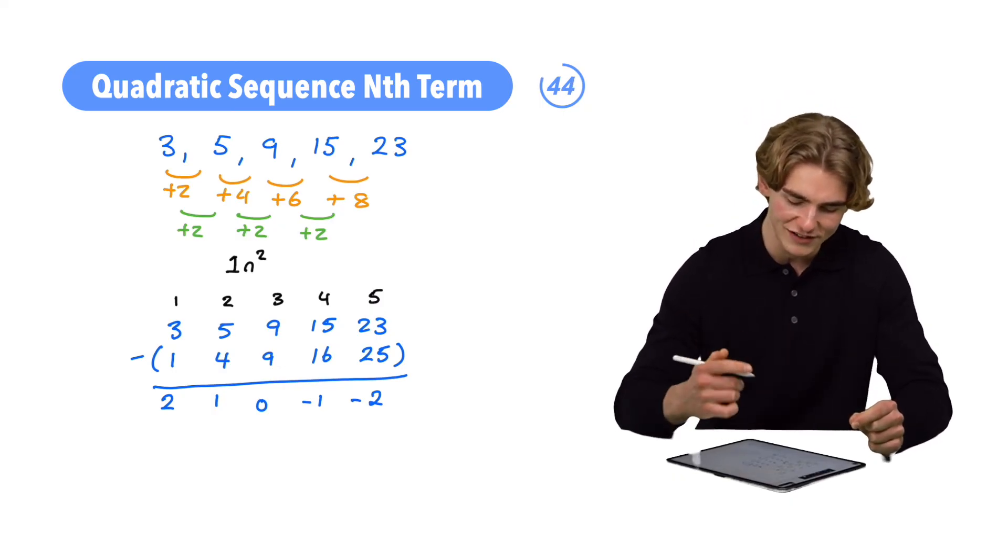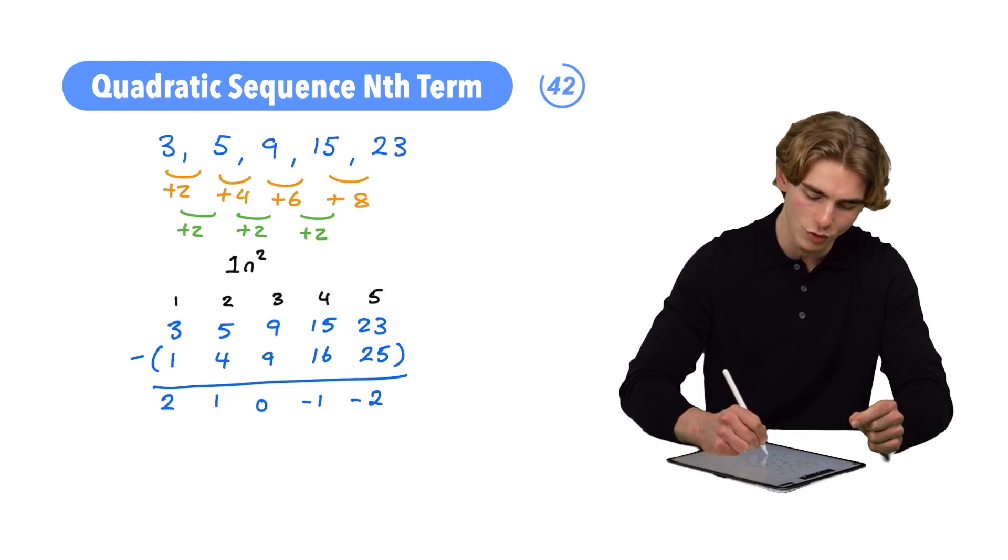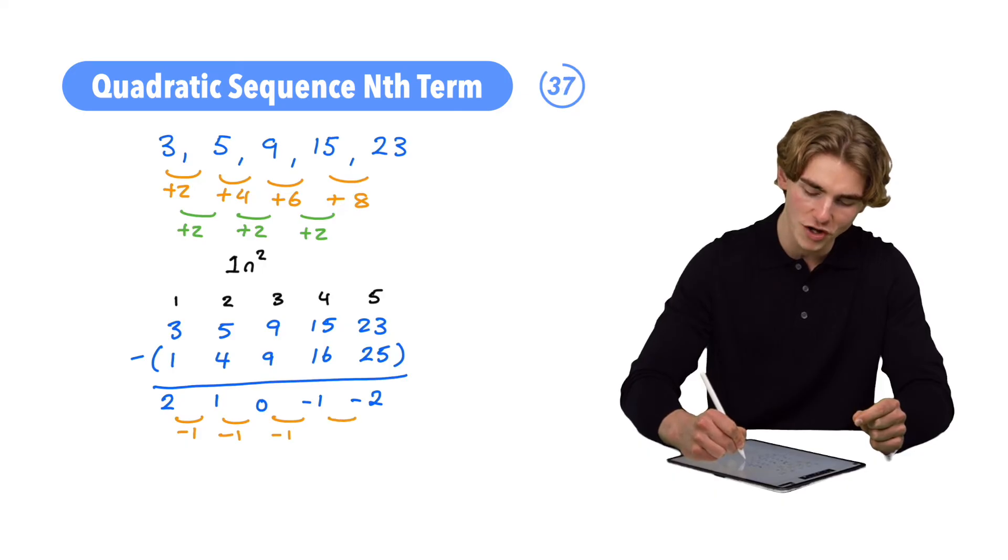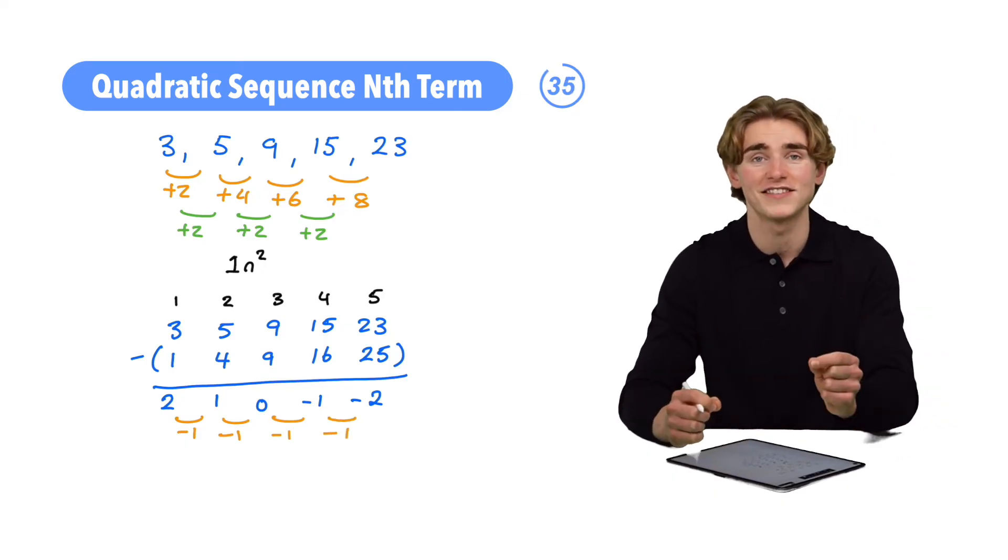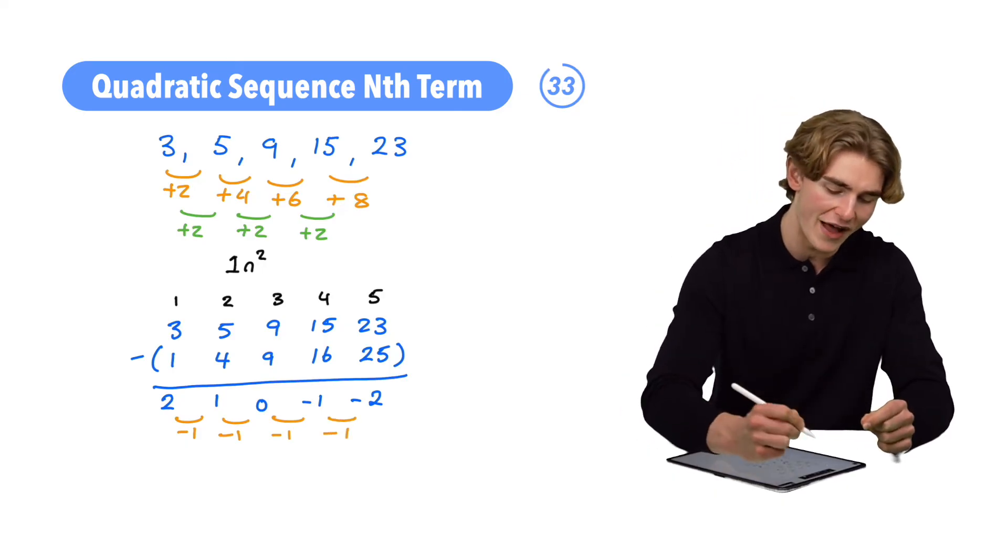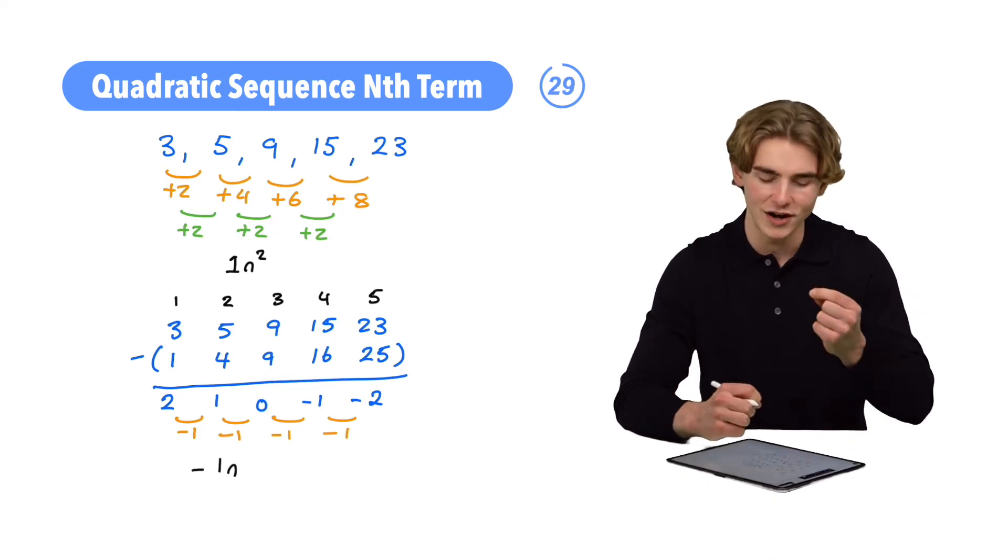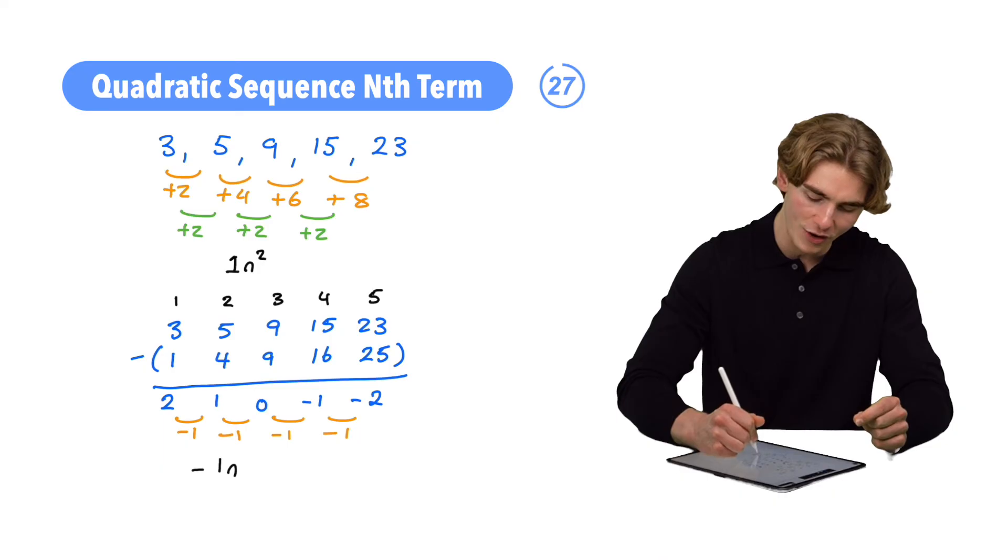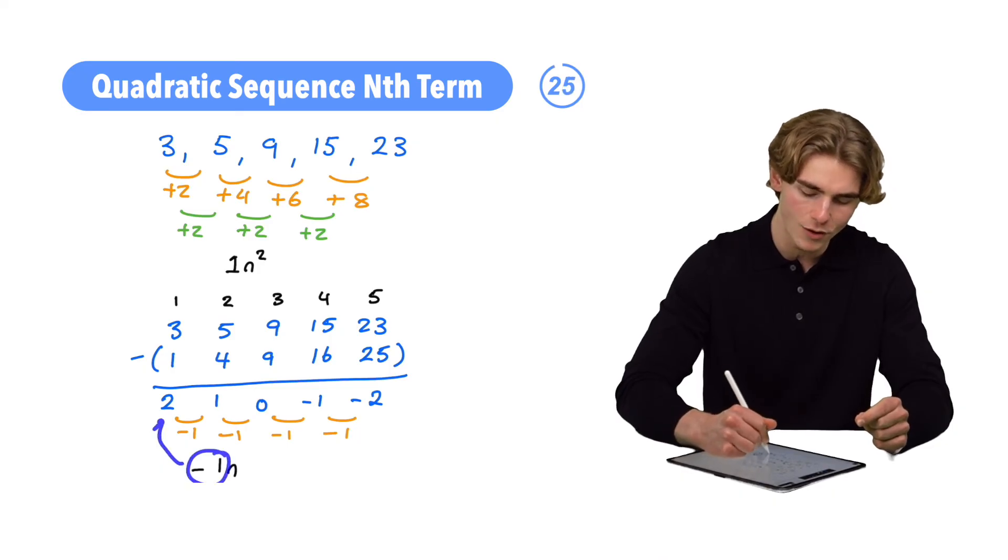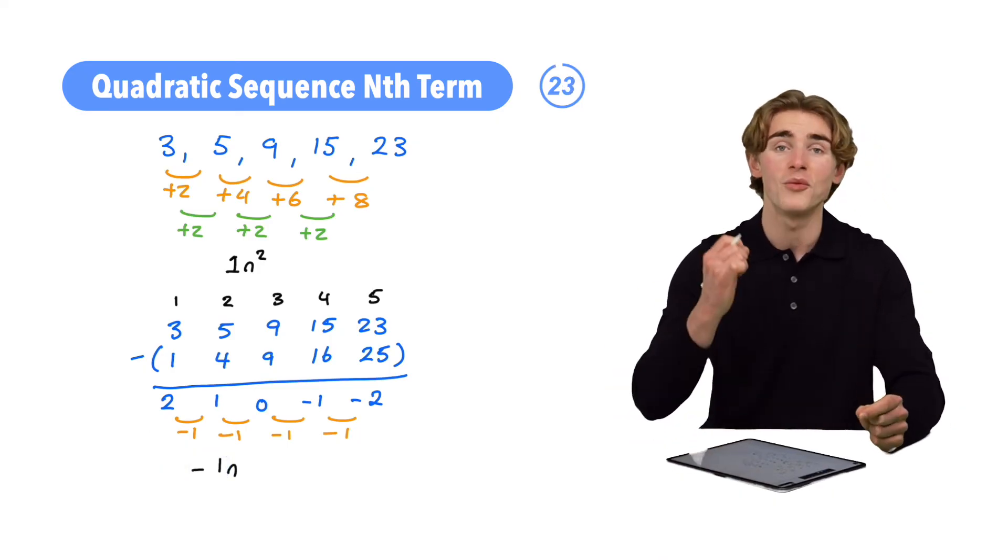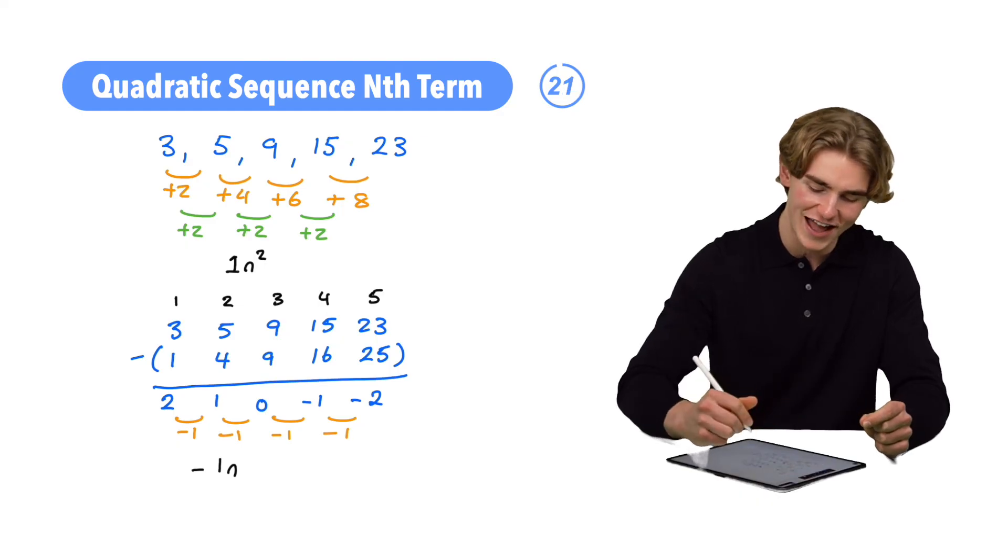So finding our nth term of this linear sequence, we're going to find our common difference. From 2 to 1, we minus 1. 1 to 0, minus 1. 0 to minus 1, minus 1. And minus 1 to minus 2, we minus 1. That's going to tell us that the first part of our nth term there is going to be minus 1n. Then how do we get from our minus 1, which is the number next to our n, our common difference, to our first term, our 2? From minus 1 to 2, we add 3.